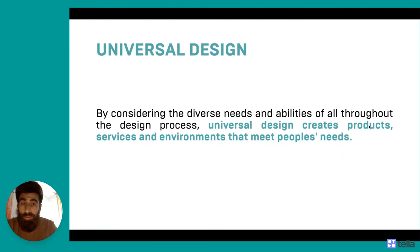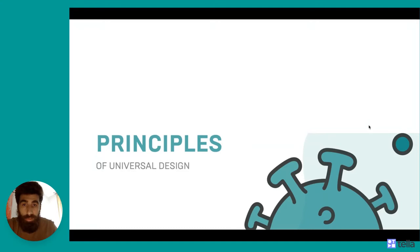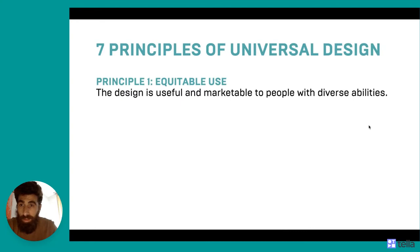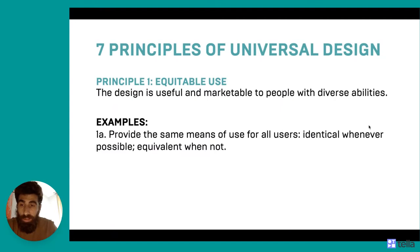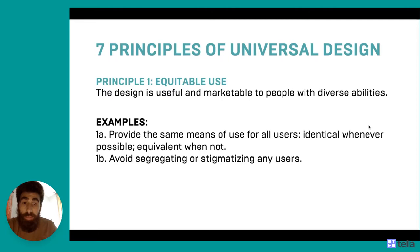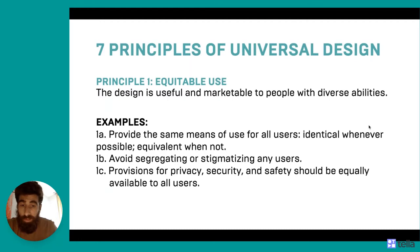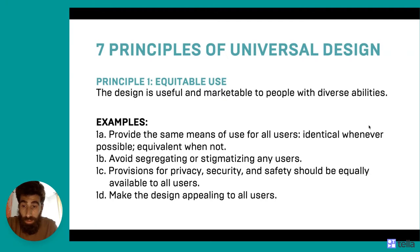Let's see what the principles of universal design are. There are seven principles. The first one is equitable use: the design is useful and marketable to people with diverse abilities. Examples include: provide the same means of use for all users — identical whenever possible or equivalent when not; avoid segregating or stigmatizing any users; provisions for privacy, security, and safety should be equally available to all users; and make the design appealing to all users.